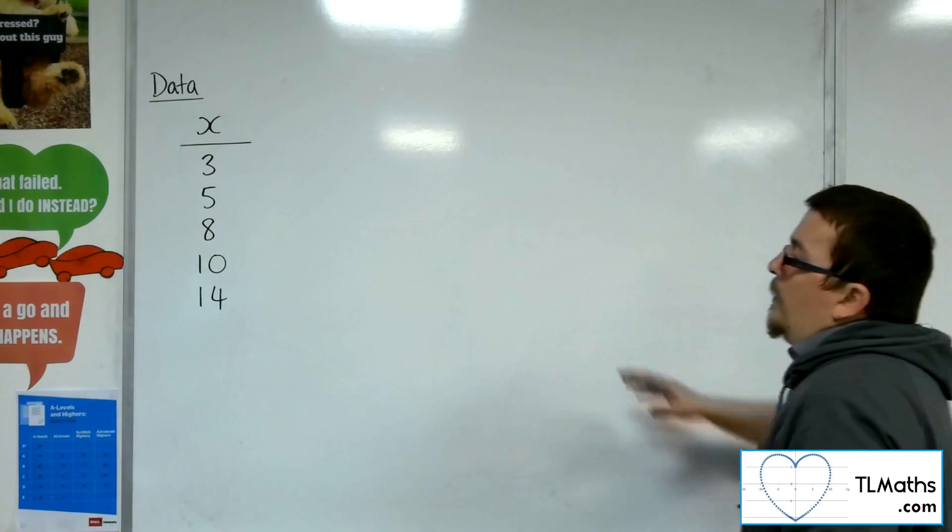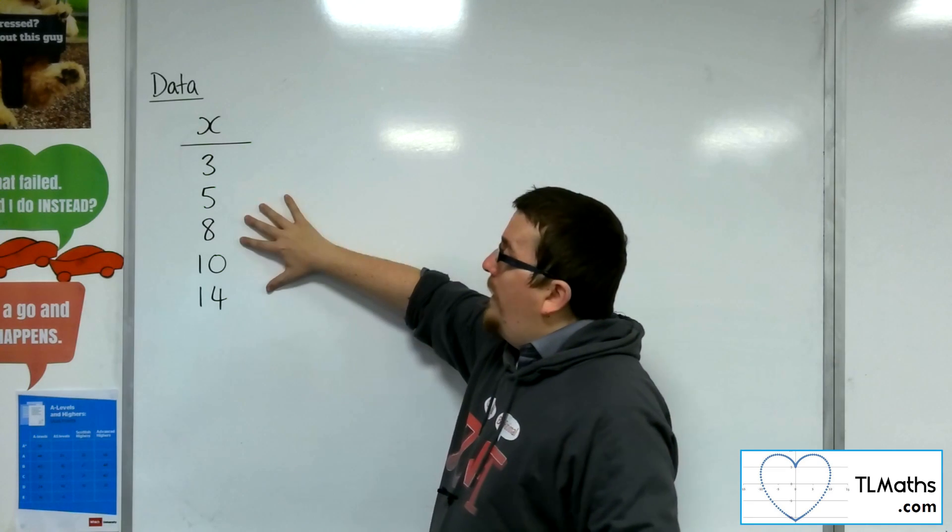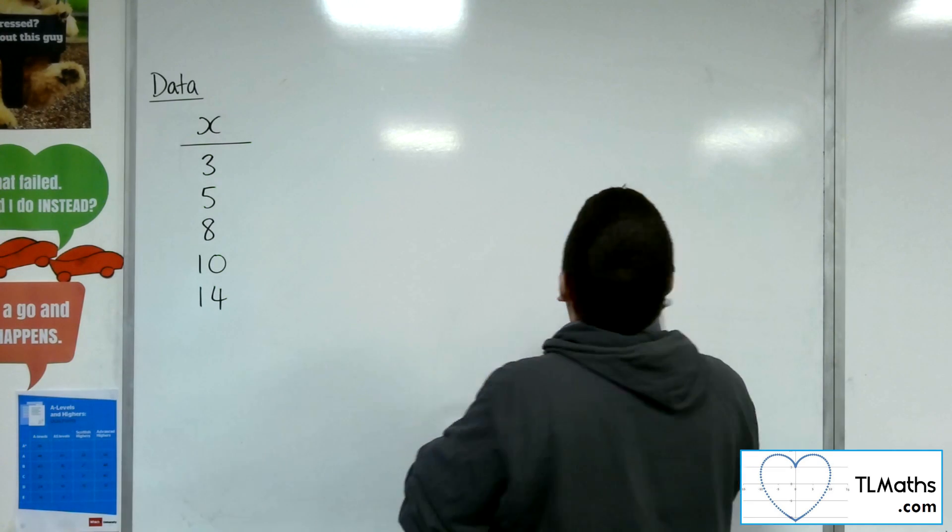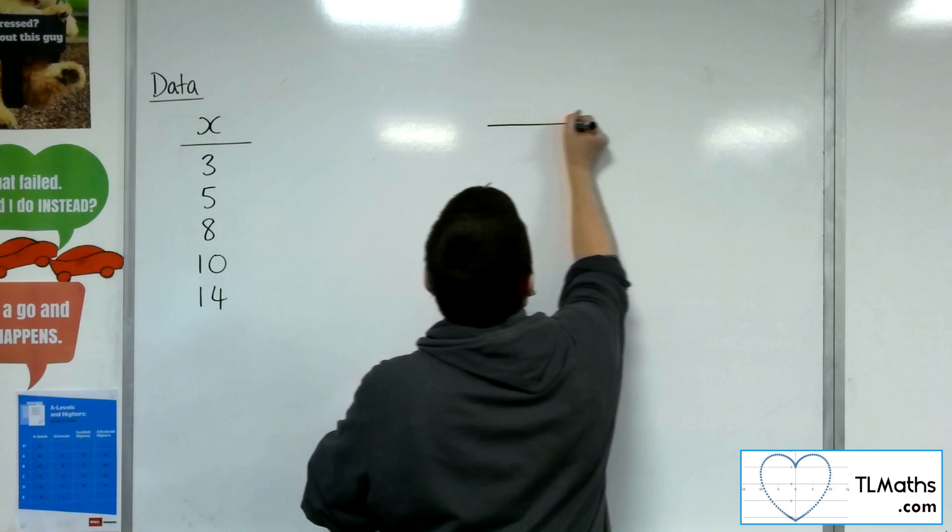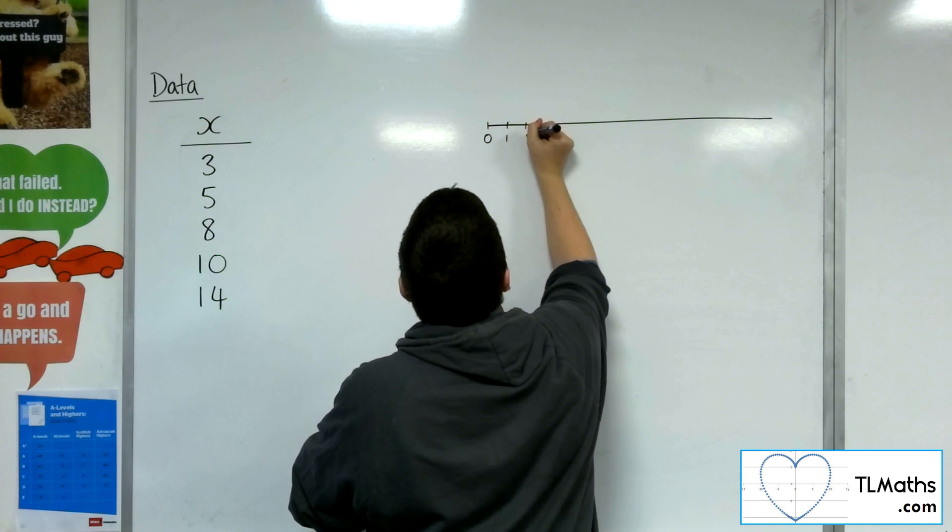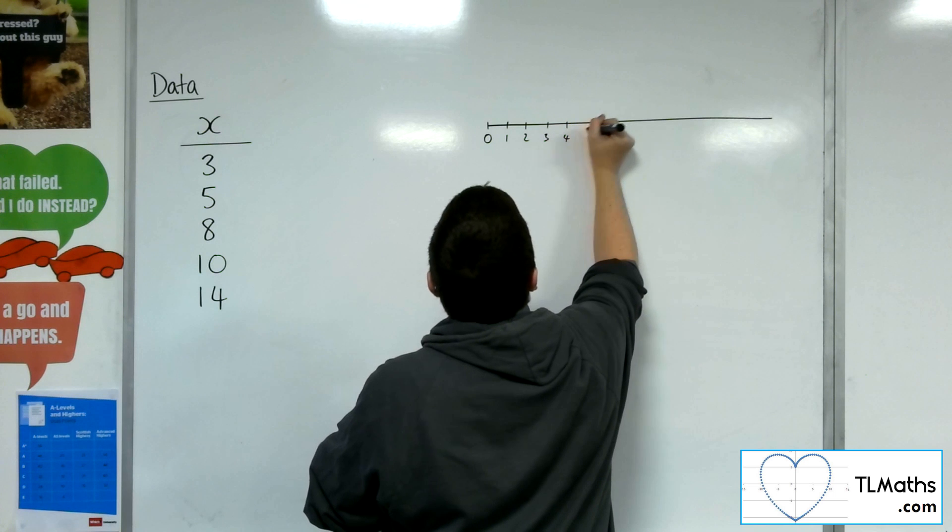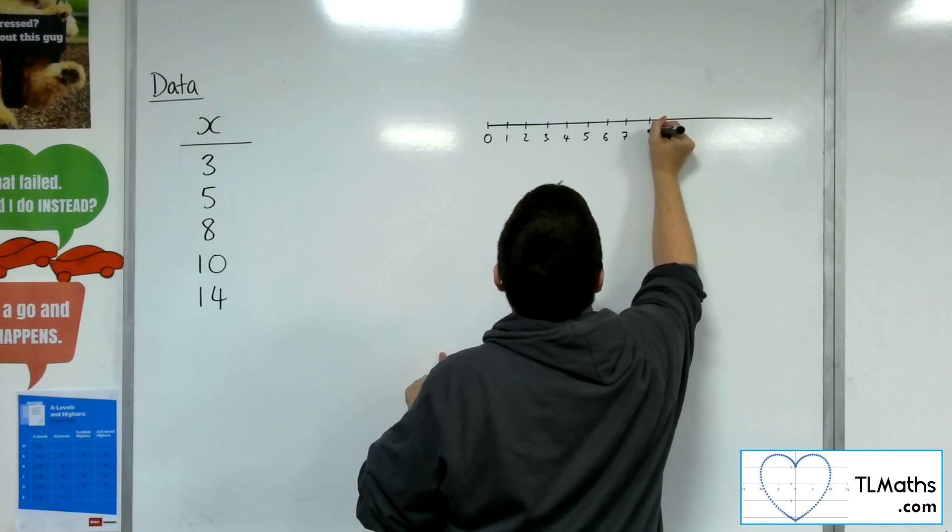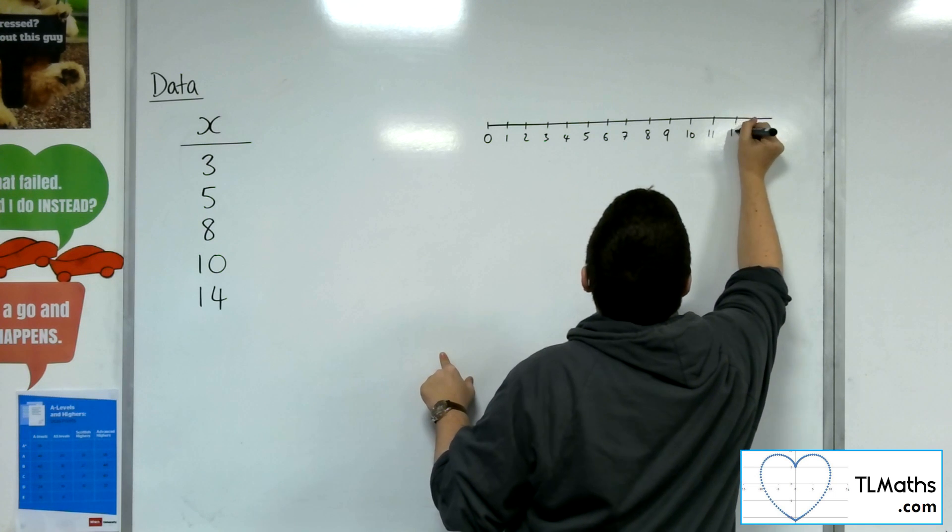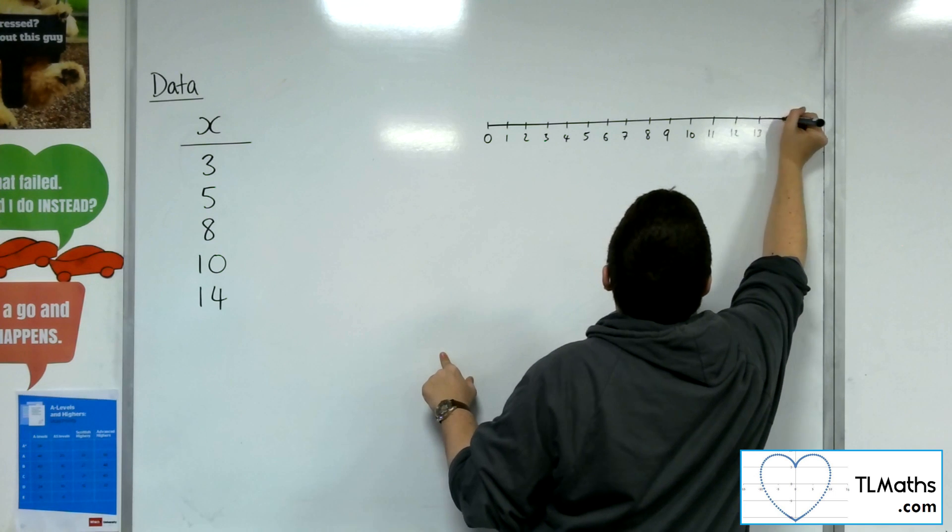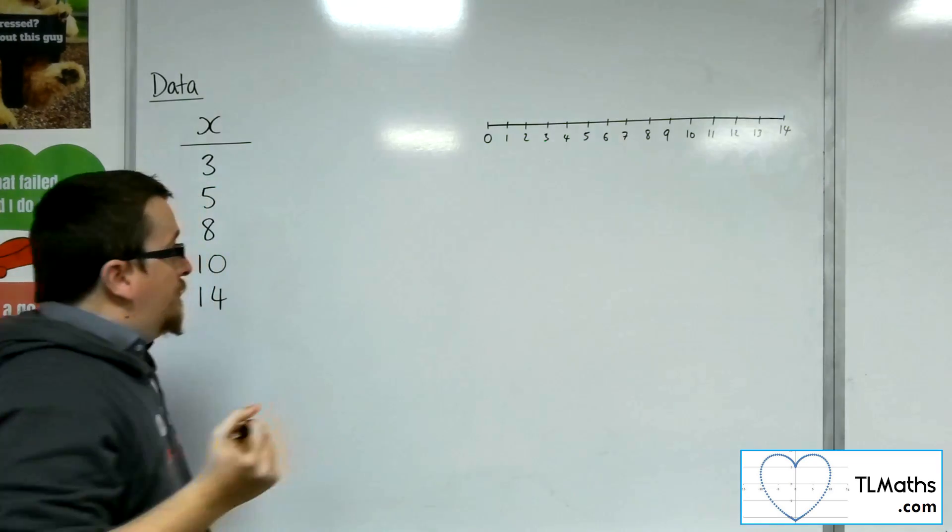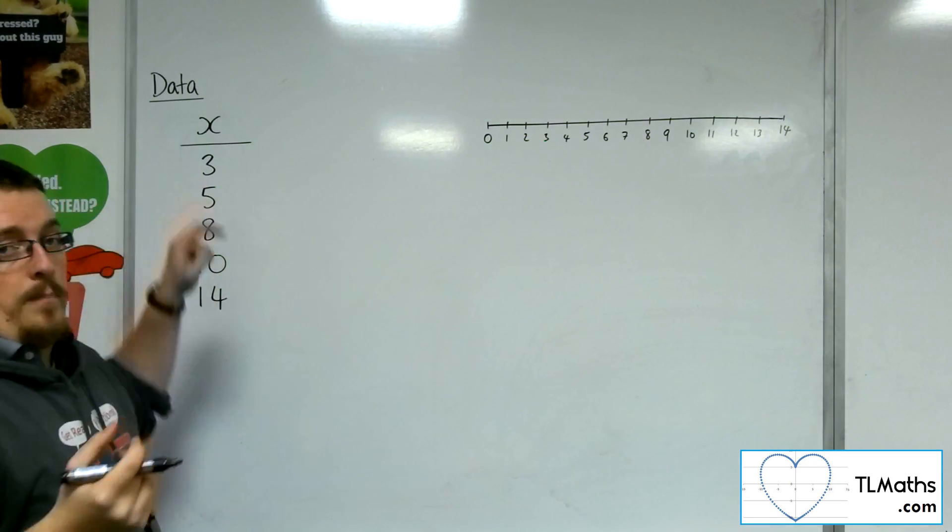So in order to visualize this, let's draw a number line and see what this data actually looks like. So 0, 1, 2, 3, 4, 5, 6, 7, 8, 9, 10, 11, 12, 13, 14. So I've got a data point at 3, so there's 3,